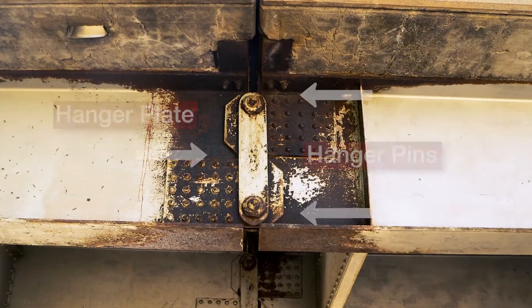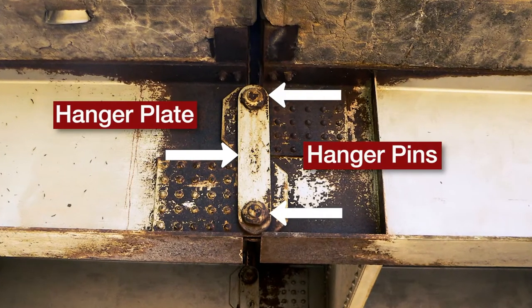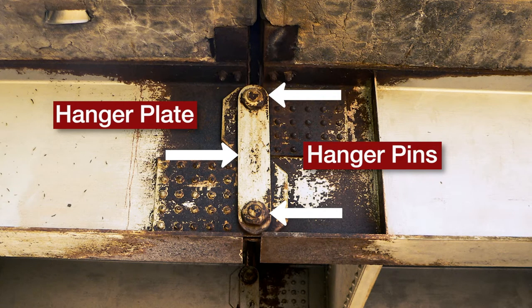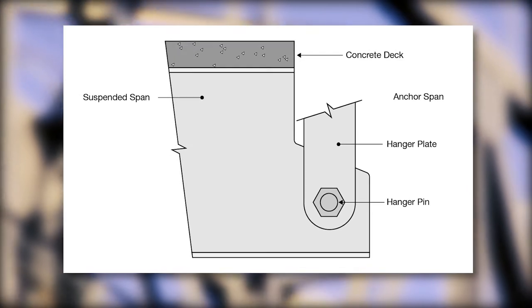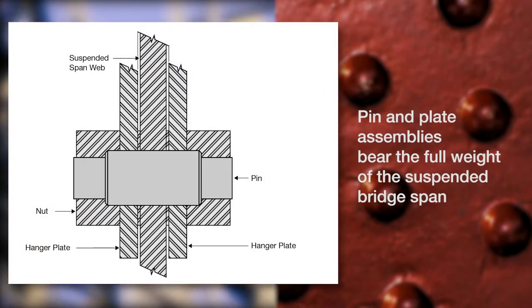Bridge hanger pin and plate assemblies are used to connect a suspended bridge span to an anchored bridge span. The pin and plate assemblies are critical components because they bear the full weight of the suspended bridge span.